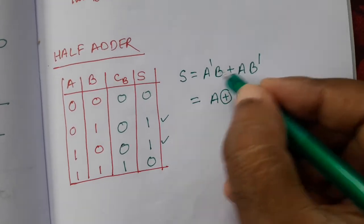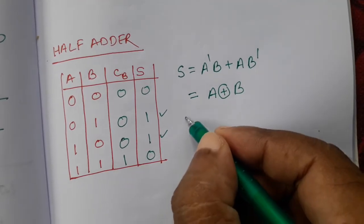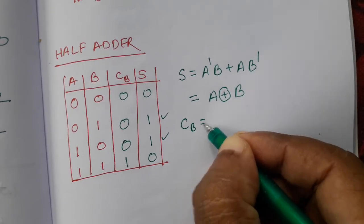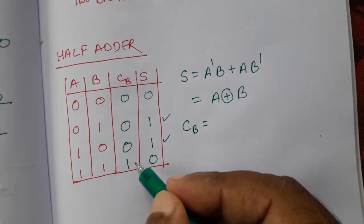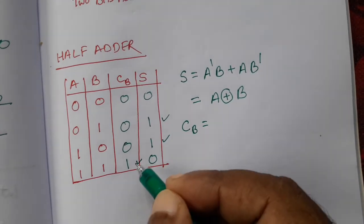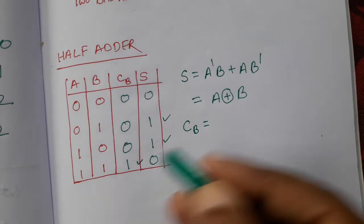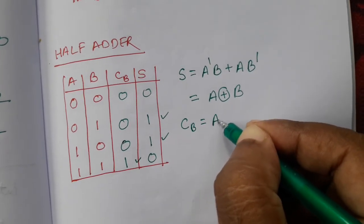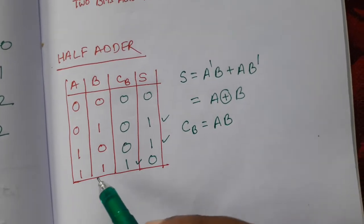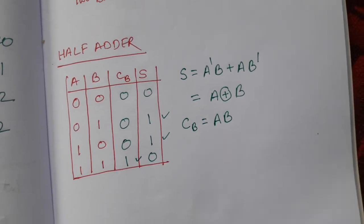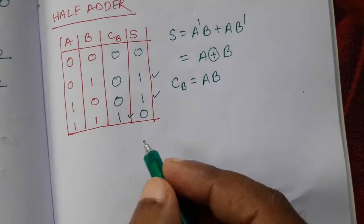Either you can write this or you can write this. And now carry bit CB. For CB, only one option is there, 1, and the inputs are 1 1. That means A is 1 and B is 1. So 1 means A and B, so AB. Now we will create the logic circuit for this.